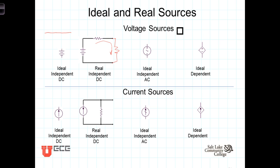We can make the distinction between voltage sources and current sources. And among current sources, we differentiate between them the same way: ideal and real, independent versus dependent, and DC current sources versus AC current sources.